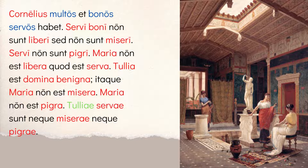Then: Tulia est domina benigna — notice the adjective ending matches the noun. Maria non est misera — she's not miserable. Maria non est pigra — Maria is not lazy. Notice the adjective was piger when describing a man, but pigra describes Maria because she's a woman. Then: Tuliae servae sunt neque miserae neque pigrae. The slaves of Tulia — note Tuliae has the AE genitive ending — are neither miserable nor lazy. Nobody in this house is lazy; everyone works hard — that's what the story is getting at.